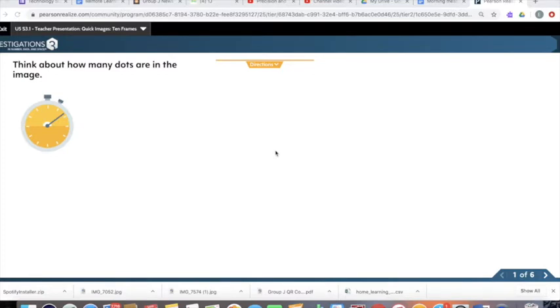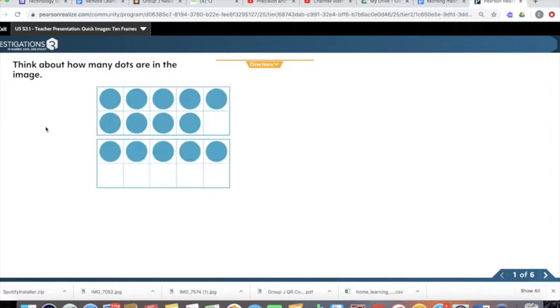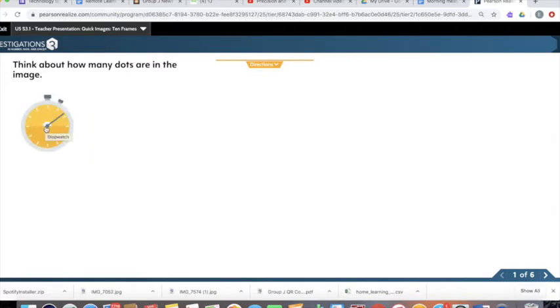Okay, here we go with quick images. You actually don't need a paper and pencil for this. This is just a looking and thinking activity. So I'm going to click the timer and you're going to think about how many dots are in the image. Ready? One, two, three. Okay. It only shows it for a few seconds.